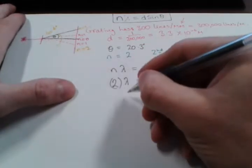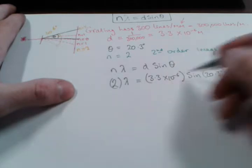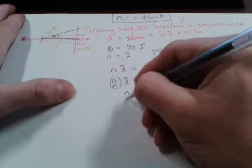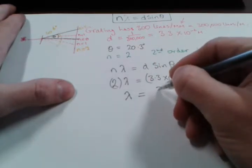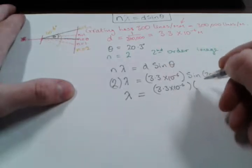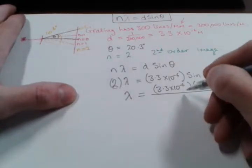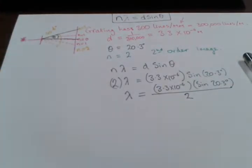So let's rearrange this a little bit because I just want to get lambda on its own. So we have to divide this side by 2, which means we have to divide this side by 2. So we get lambda is equal to 3.3 by 10 to the minus 6 times the sine of 20.3 degrees all over 2. And then we put this into a calculator to get our answer.